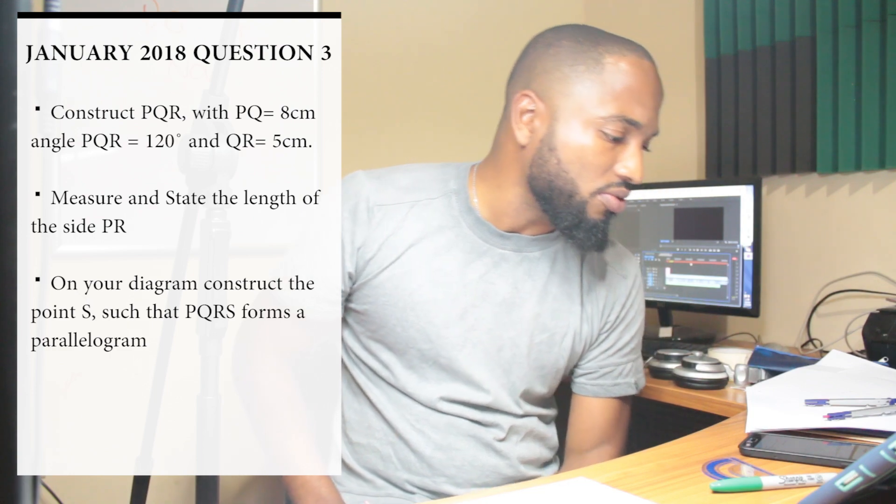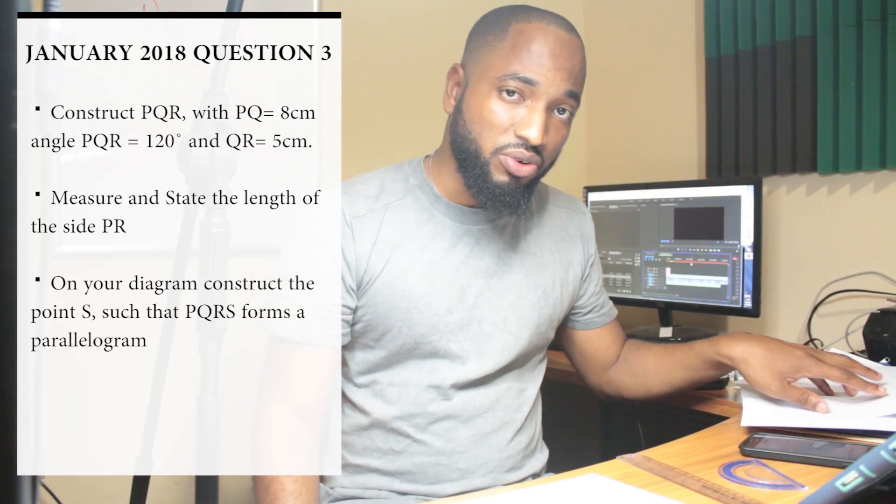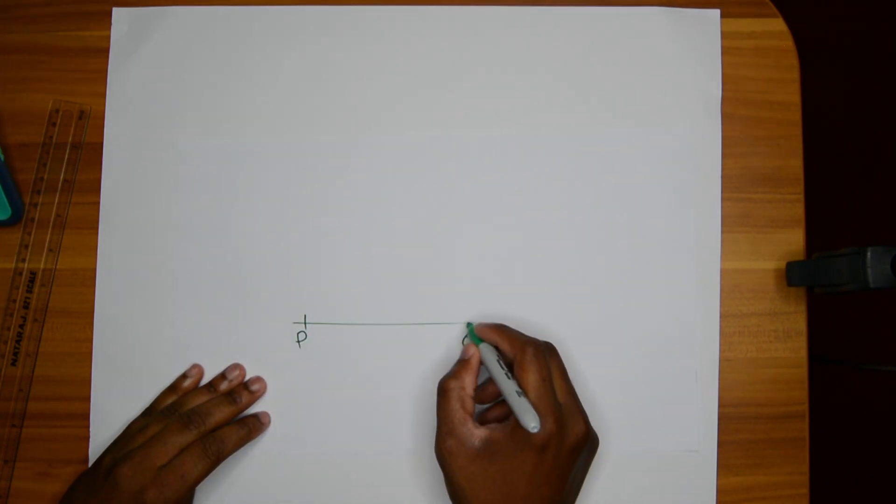The first thing in doing all these questions is draw a sketch. You want to hit them a sketch first just to see how the diagram is. Make sure you plan out your space properly. PQ is 8, so PQ is 8.